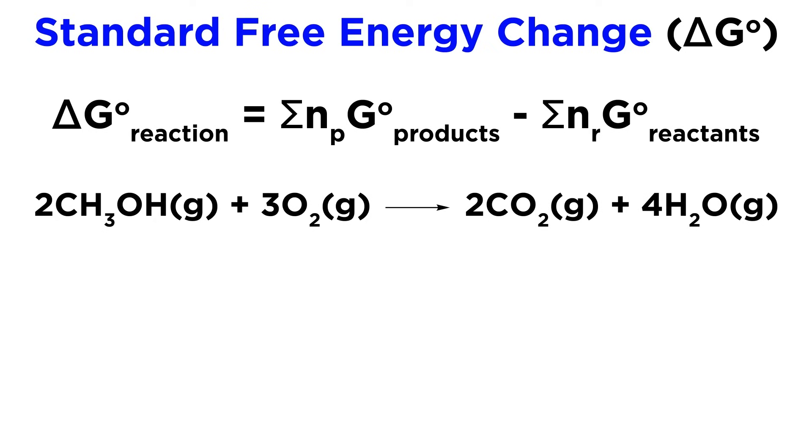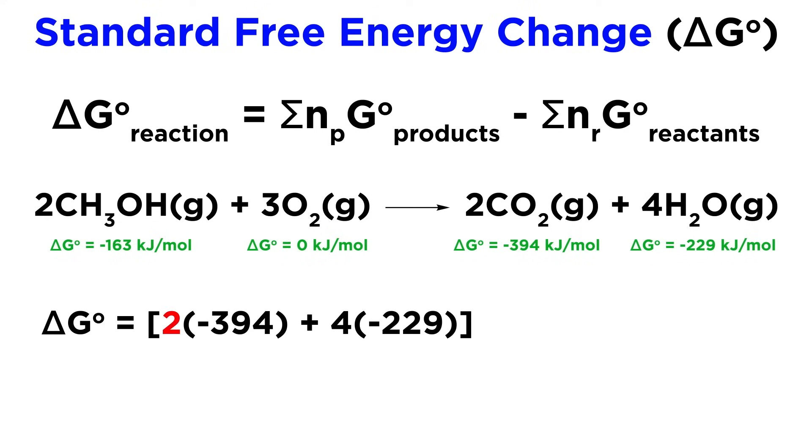For example, we have the combustion of methanol and some associated standard free energies of formation. Let's plug these into the equation. The products go first, multiplying carbon dioxide by two and water by four, and then the reactants, multiplying methanol by two, and for oxygen it doesn't matter since it's zero, as it's a pure element.